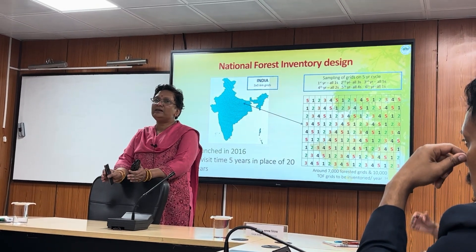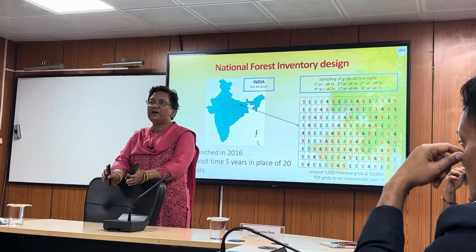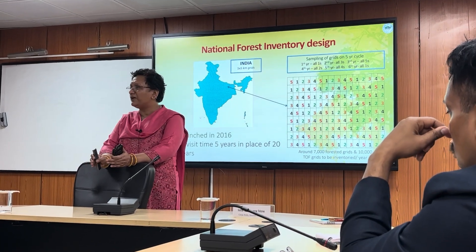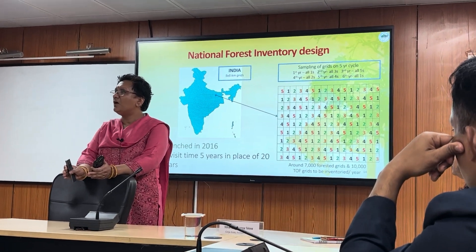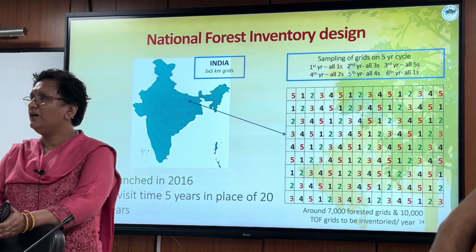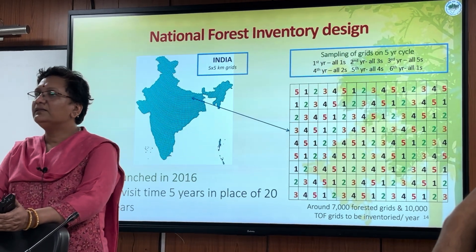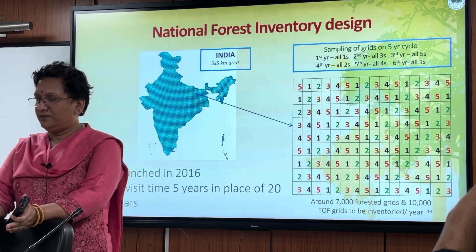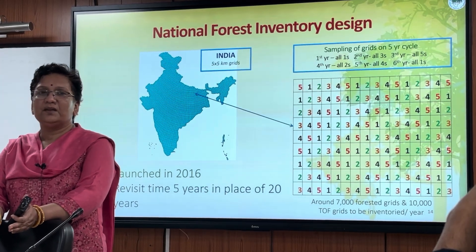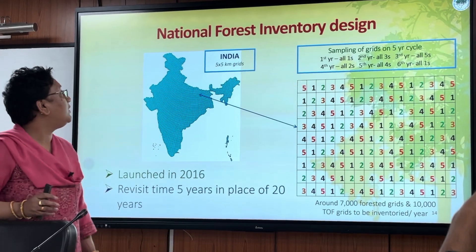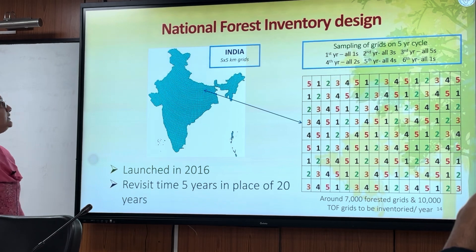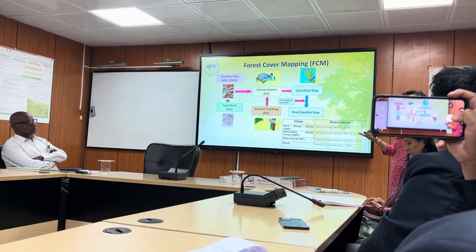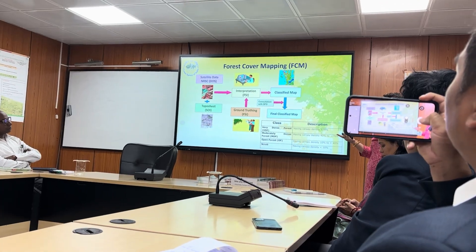Forested grids are numbered from 1 to 5. Following a sampling design on a 5-year basis, we take all ones in the first year, all threes in the second year, all fives in the third year, all twos in the fourth year, and all fours in the fifth year. This is a field-based exercise following the sampling design.